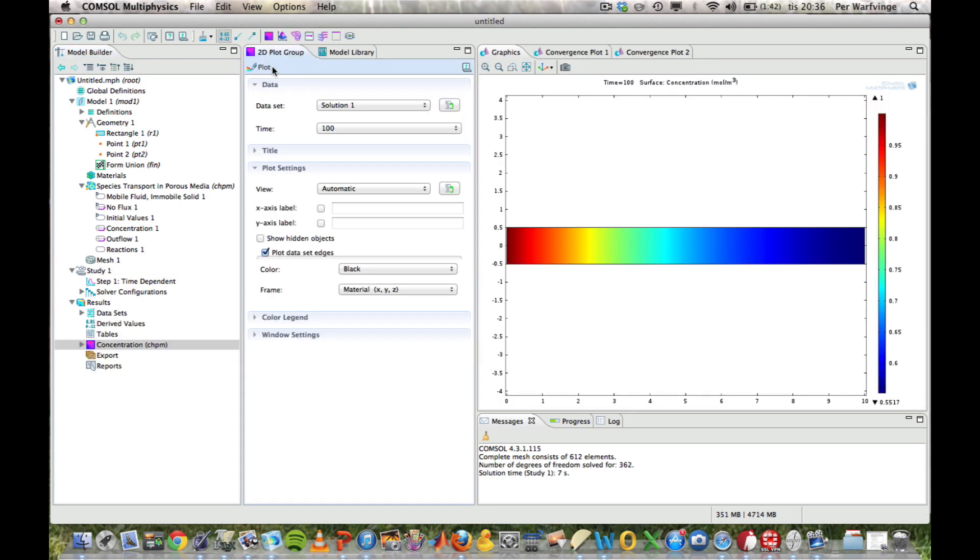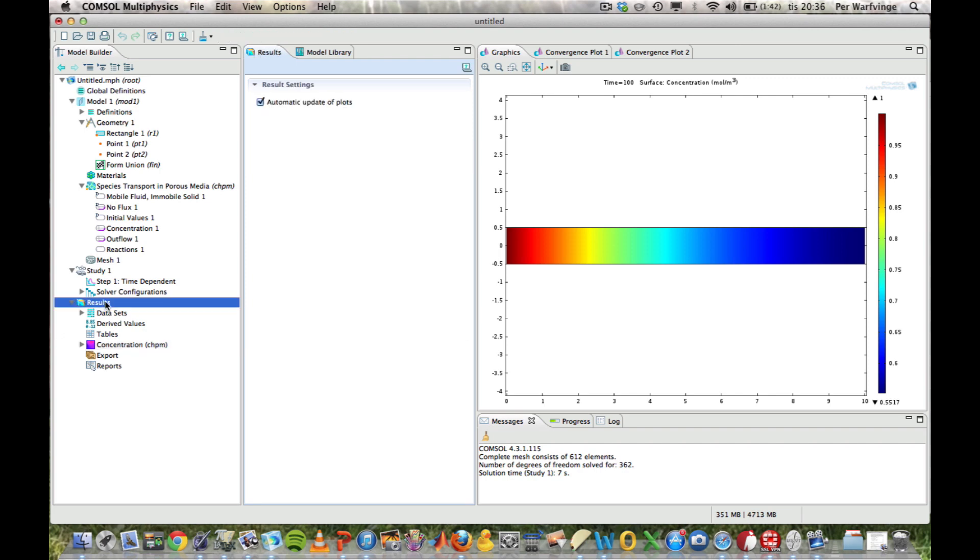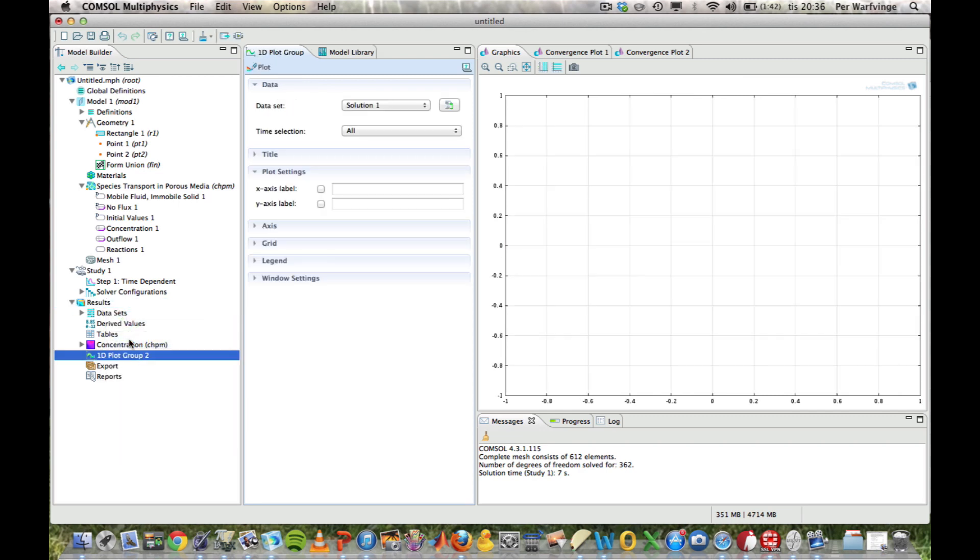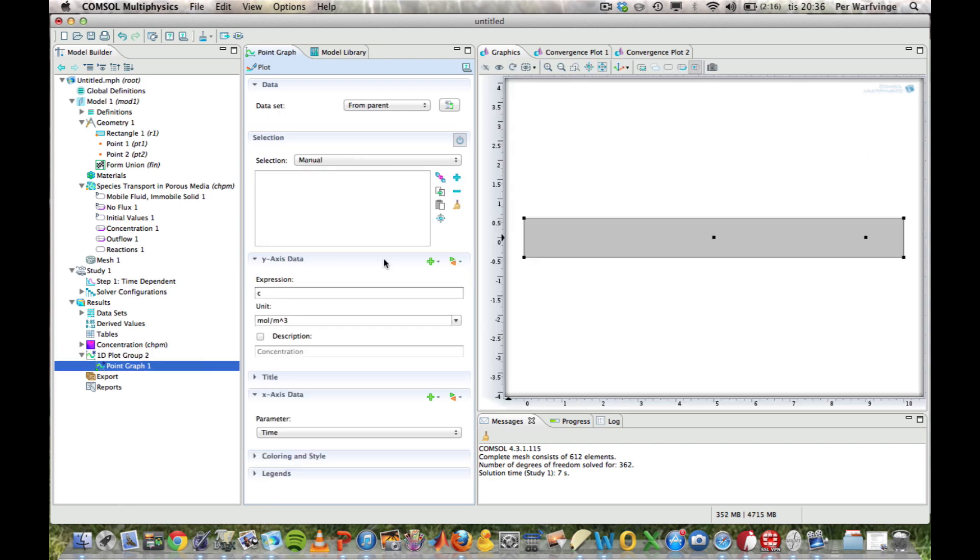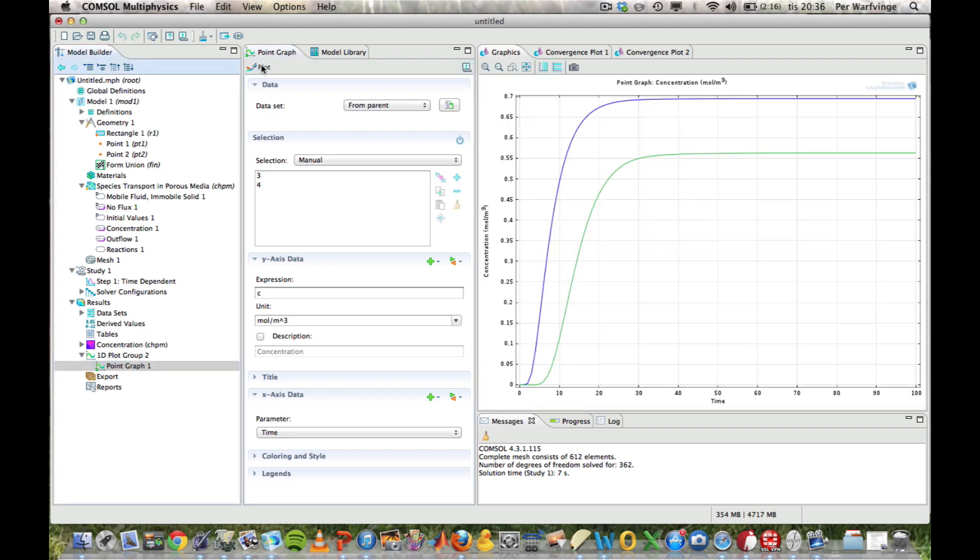This refers to time 100. It's really hard to get anything out of this picture. But there's a trick. If we wanted to look at the various points instead. Put the cursor on results. We right click. We can make a 1D plot group. That 1D plot group can be further defined. If we right click on that one, we can make a so-called point graph. And that could include this point. And that one. And that point. And include that one. And if we plot it, we simply get concentrations and how they develop.